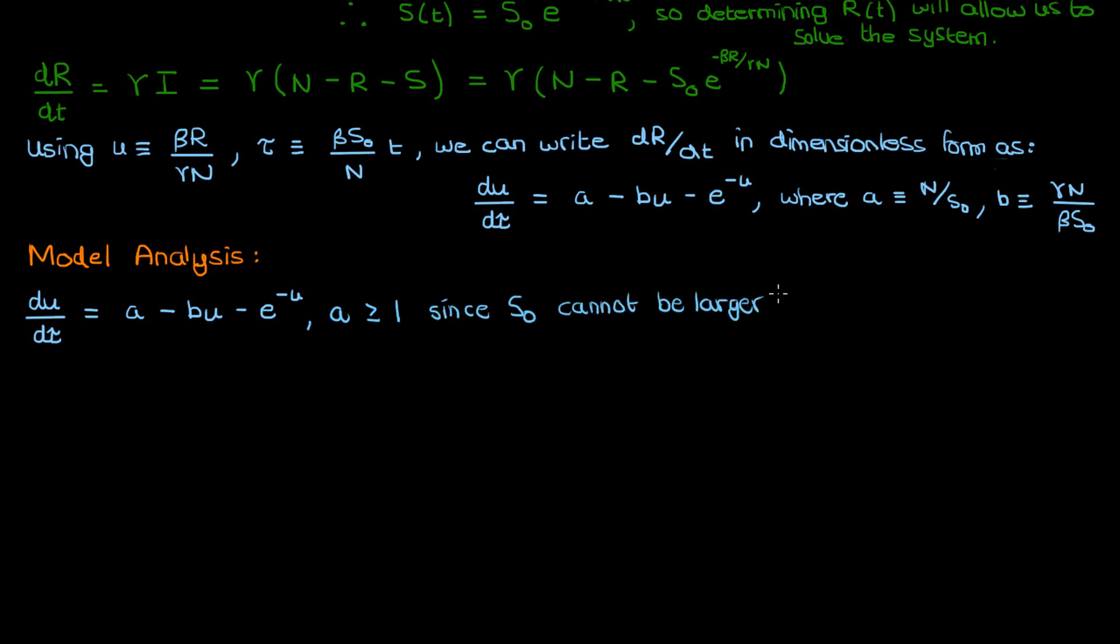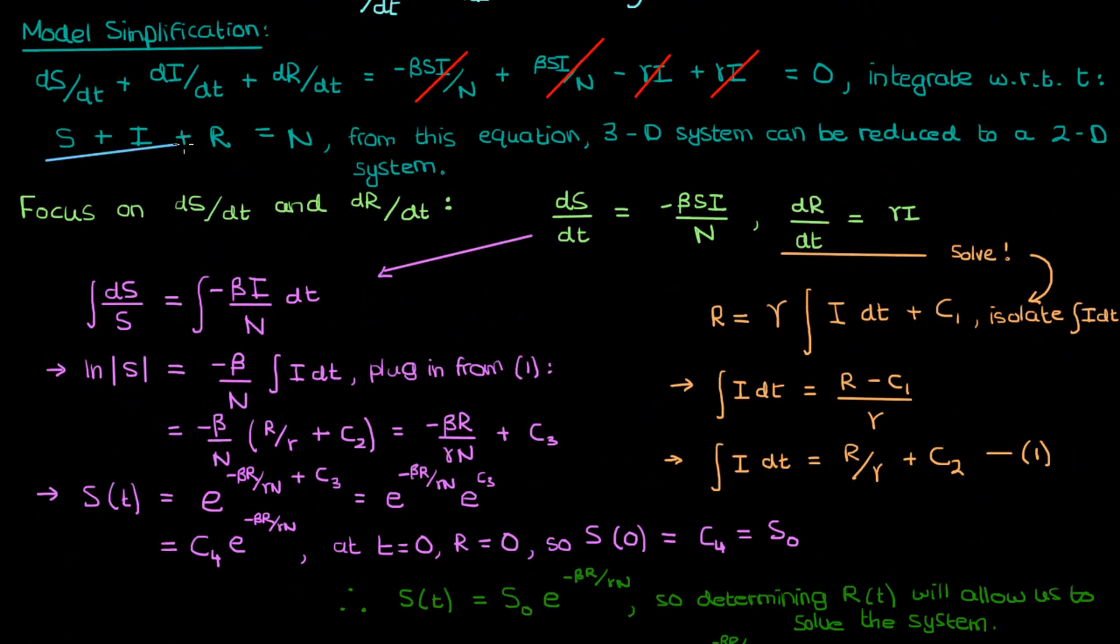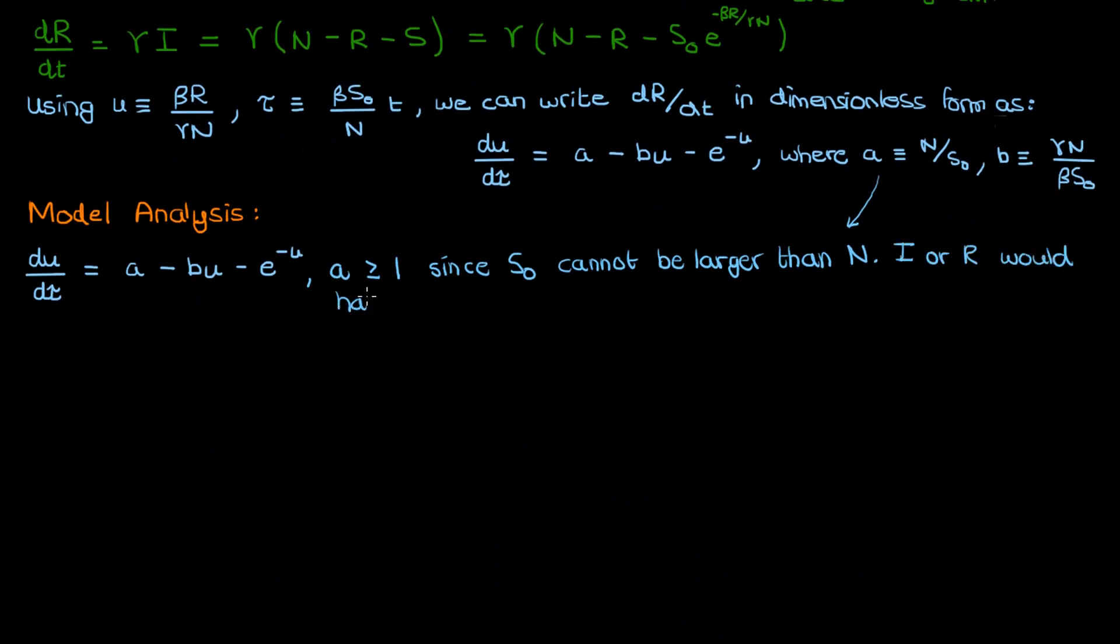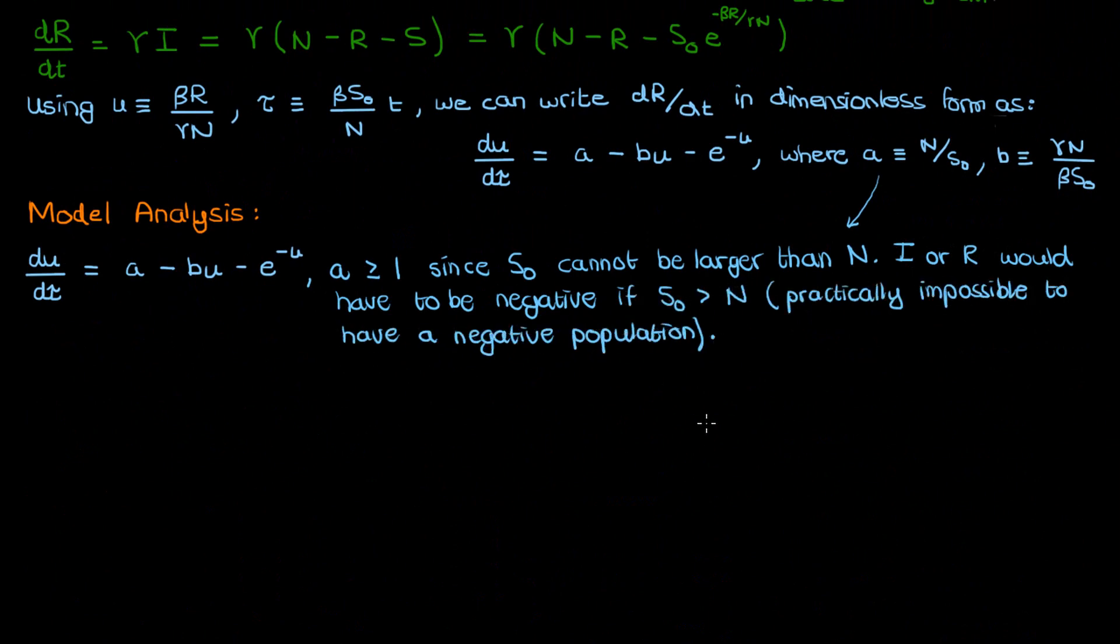S0 cannot be greater than N because if we go back to this equation above, this would mean that the number of infected people or the number of dead people is negative. And that doesn't make sense at all. Therefore, A must be greater than or equal to 1.